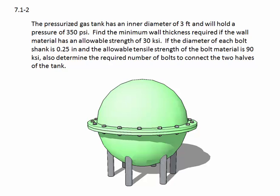Find the minimum wall thickness required if the wall material has an allowable strength of 30 ksi. If the diameter of each bolt shank is 0.25 inches and the allowable tensile strength of the bolt material is 90 ksi, also determine the required number of bolts to connect the two halves of the tank.